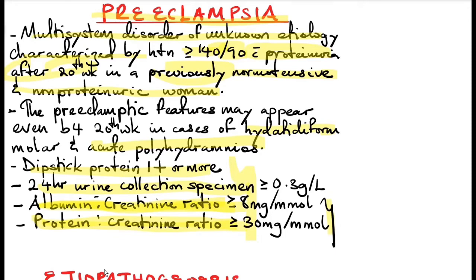In cases where you are not sure about the proteinuria — for example, if a patient also has a UTI — because in a UTI, if you do a dipstick protein, you can have a protein of one plus or even trace. In those cases, you can use the albumin creatinine and the protein creatinine ratio to confirm the proteinuria.